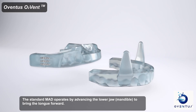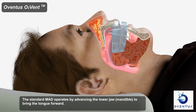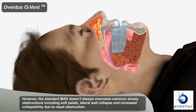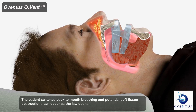The standard MAD operates by advancing the lower jaw, or mandible, to bring the tongue forward. However, the standard MAD doesn't always overcome common airway obstructions, including soft palate, lateral wall collapse, and increased collapsibility due to nasal obstruction. The patient switches back to mouth breathing, and potential soft tissue obstructions can occur as the jaw opens.